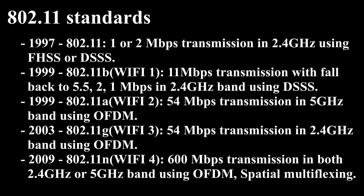802.11b, also referred to as Wi-Fi 1, year 1999, or High Rate — an extension to 802.11 that applies to wireless LANs and provides 11 Mbps transmission with a fall back to 5.5, 2, and 1 Mbps in the 2.4 GHz band. 802.11b uses only direct sequence spread spectrum (DSSS).